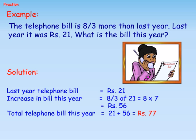Example: The telephone bill is 8/3 more than last year. Last year it was 21 rupees. What is the bill this year? Solution: Last year's telephone bill equals 21 rupees. Increase in bill this year equals 8/3 of 21, which equals 8 into 7, equals 56 rupees. Total telephone bill this year equals 21 plus 56, equals 77 rupees.